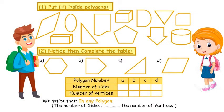Put a check mark inside the correct polygons. The first one is a polygon — all of its sides are straight and it has no curves. The second one has a curve, so it is not a polygon.